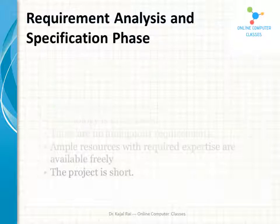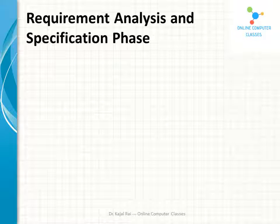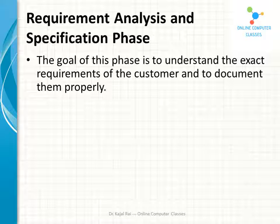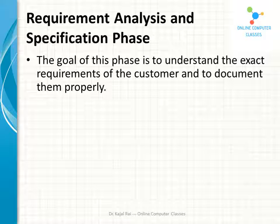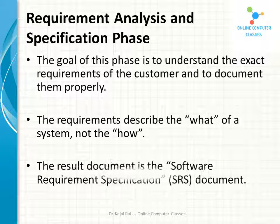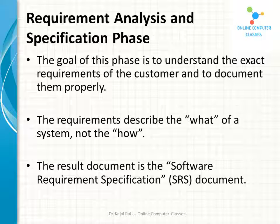Now let's begin with the first phase of the waterfall model: the Requirement Analysis and Specification phase. The goal of this phase is to understand the exact requirements of the customer and to document them properly. This activity is usually executed together with the customer or the end user who is going to use the product. We have to document all the functions, performance, and interfacing requirements for the software. The requirements describe what the system should do, not how to do it.